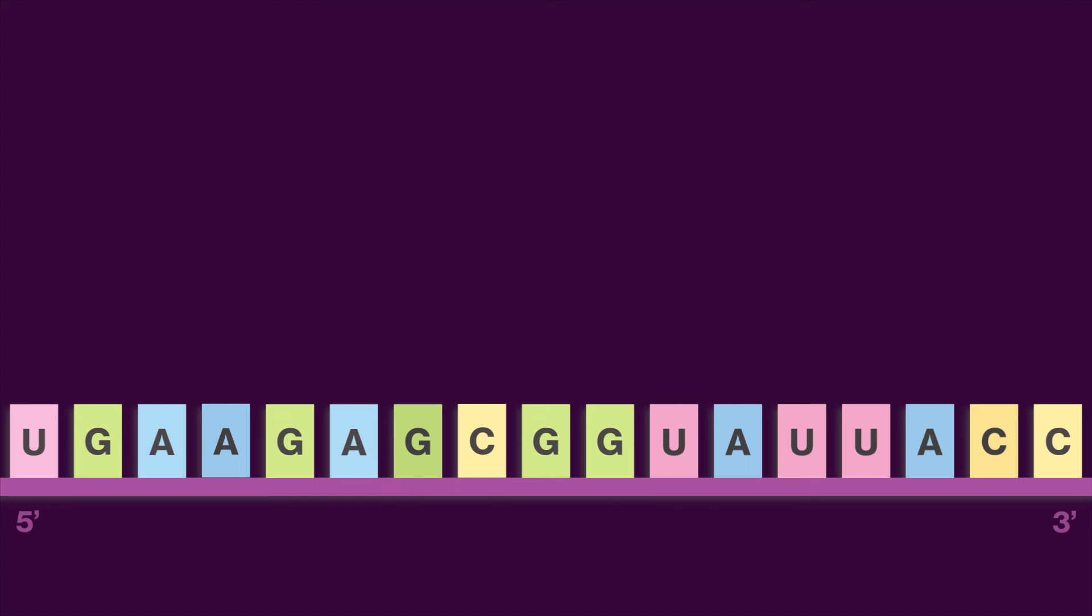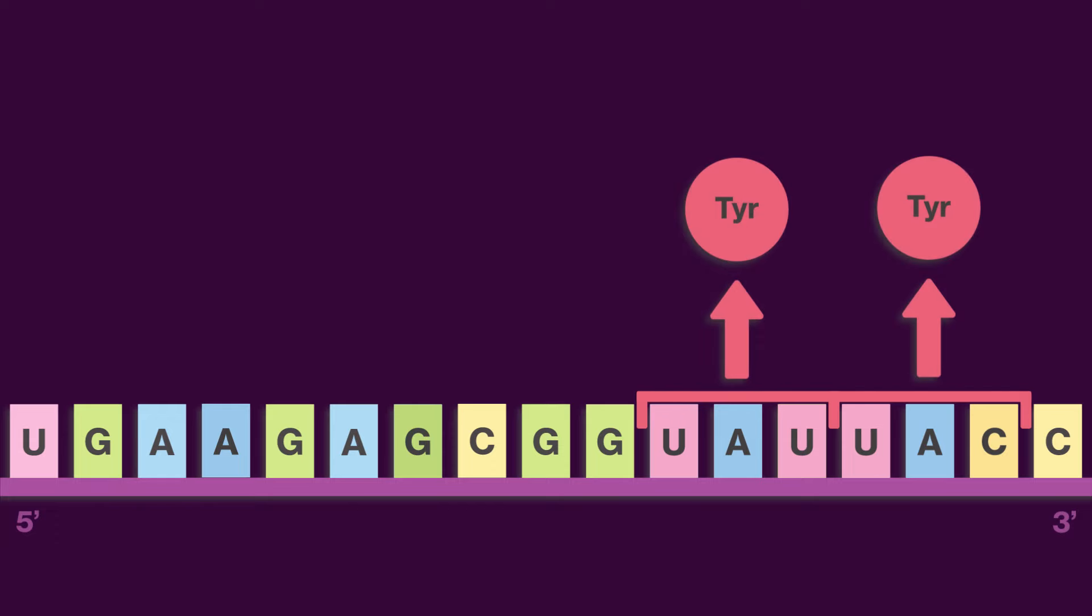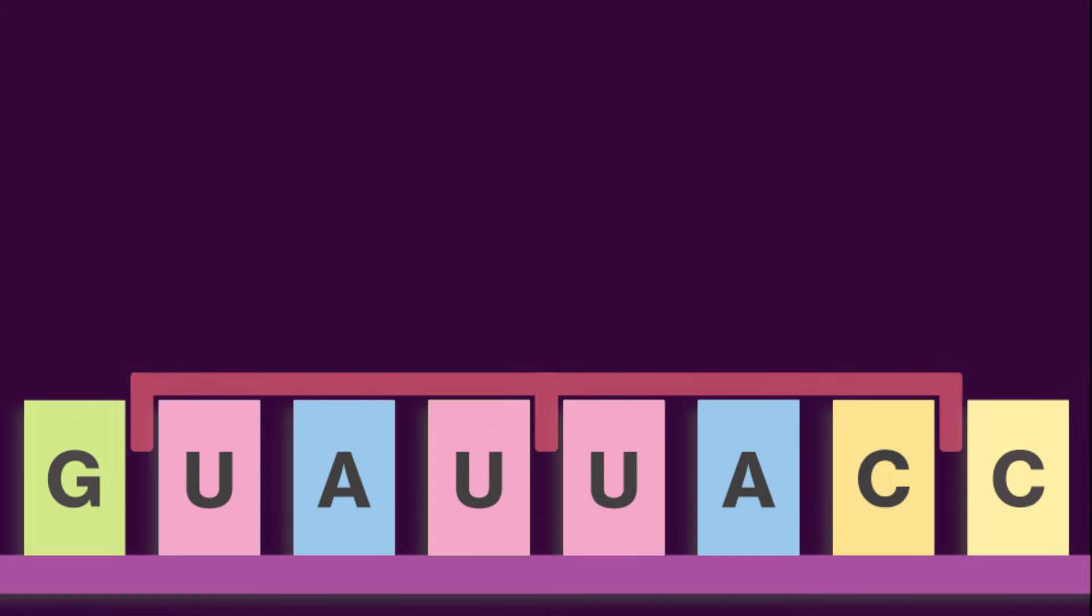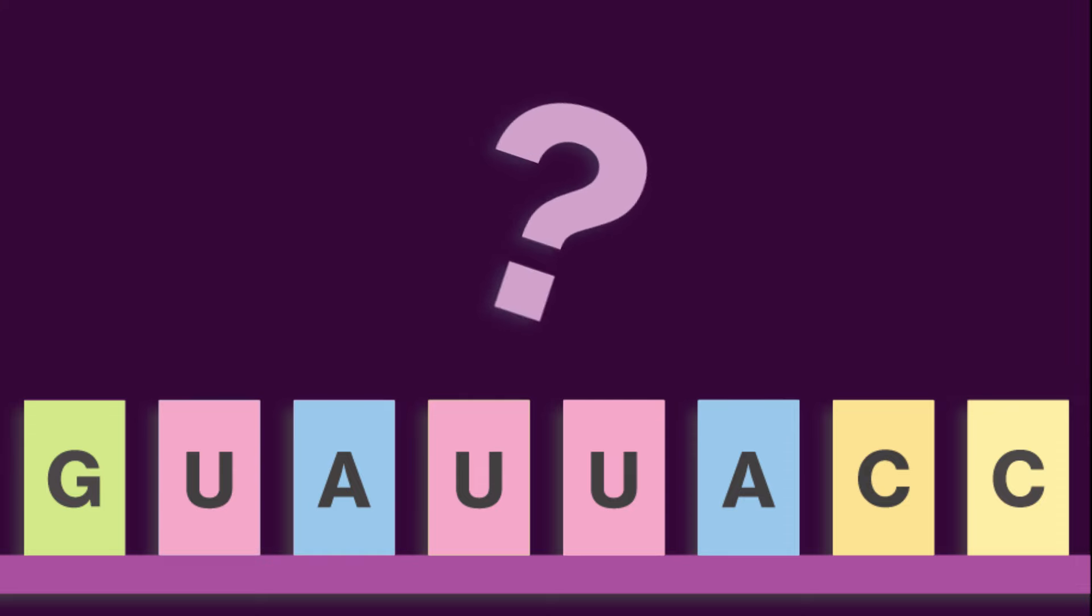This means some tRNAs can pair with multiple synonymous codons that encode the same amino acid, like UAU and UAC, which both code for tyrosine. So if two synonymous codons result in the same amino acid, is it fine for a gene to use either codon?